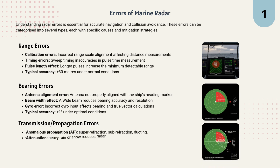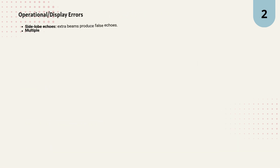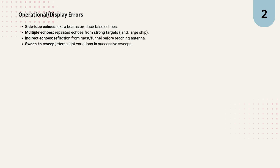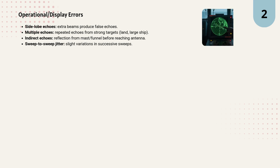Then we have transmission and propagation errors. This includes anomalous propagation like superrefraction, subrefraction, and ducting, as well as attenuation caused by heavy rain or snow, which reduces range. Ship structures may also create shadow or blind sectors where echoes are lost. Operational and display errors are another category. For example, side-lobe echoes can create false returns. Multiple echoes may appear from strong targets like land or large ships. Indirect echoes can happen when signals reflect from the mast or funnel before reaching the antenna. And sweep-to-sweep jitter causes slight variations in successive scans.